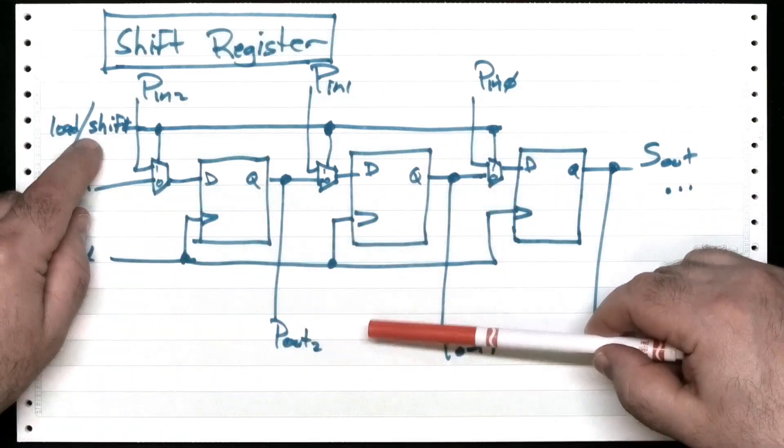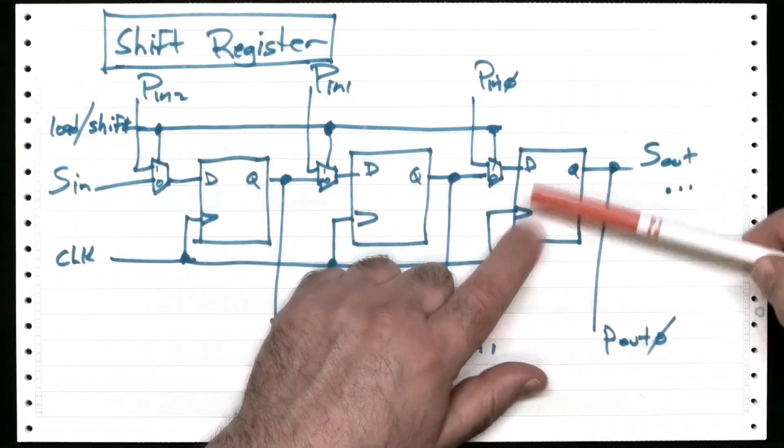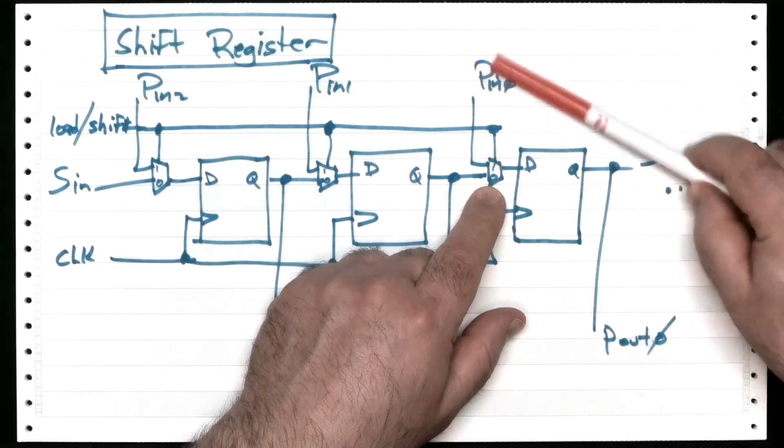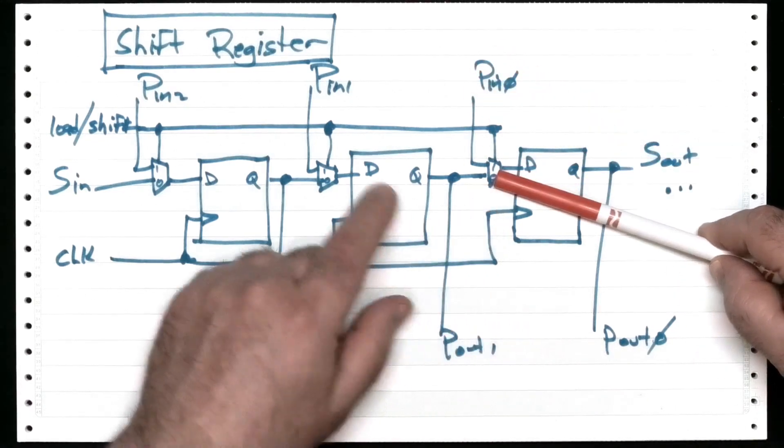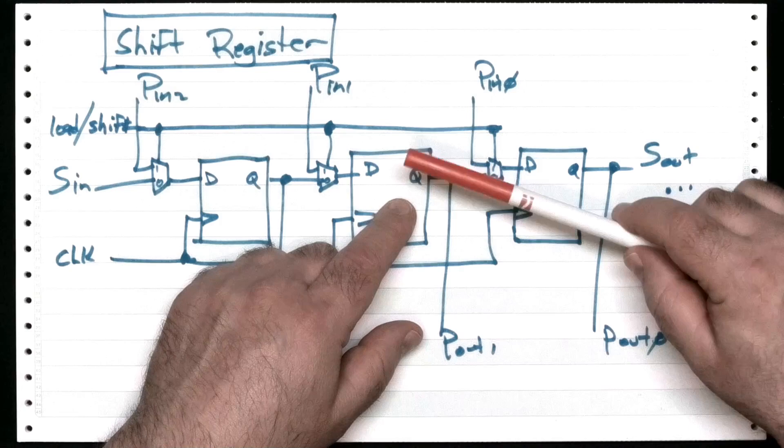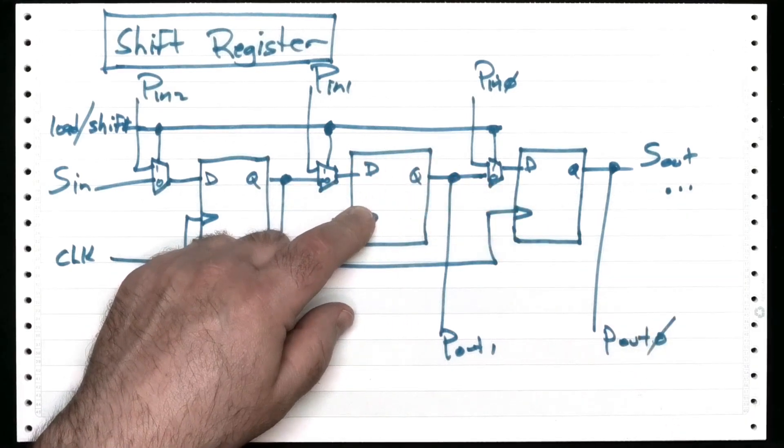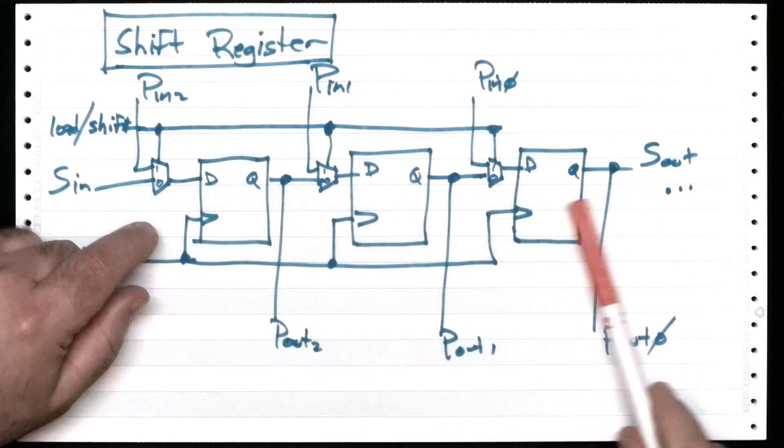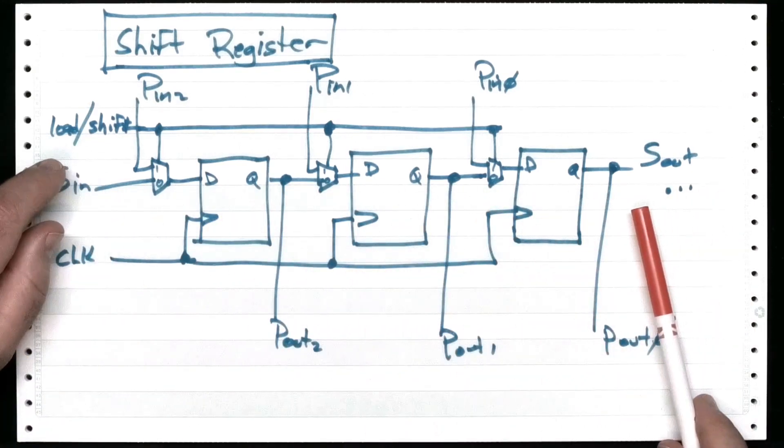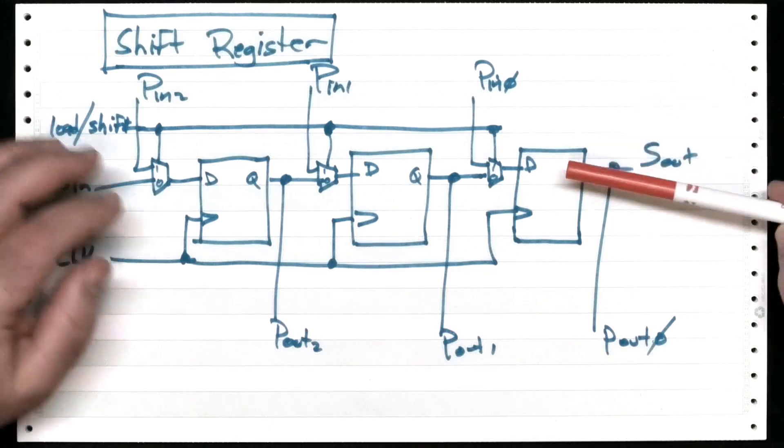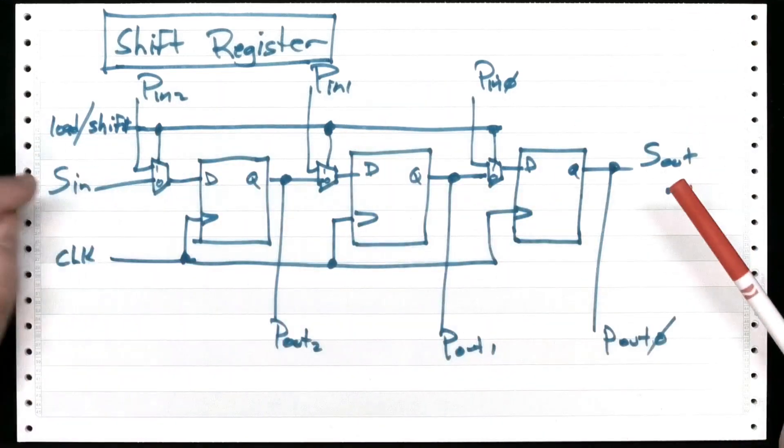So this signal here will control whether when a clock arrives this latch loads the data from here, PN0, or if it loads it from the output Q bit of the latch to its left. You just keep on going as far as you want. You can make these as wide as you want. I'm going to just show you three. If you want 32, just put a bunch of these together.